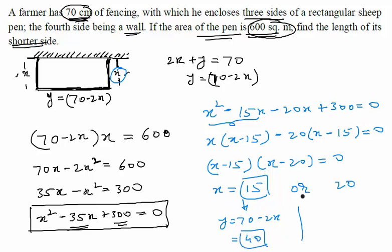Or if x is equal to 20, y is again 70 minus 2x, which means 70 minus 40, which will give us y is equal to 30.